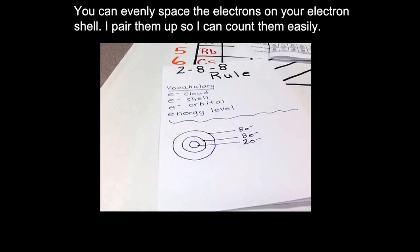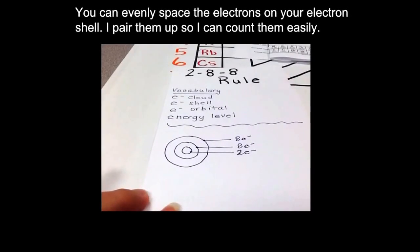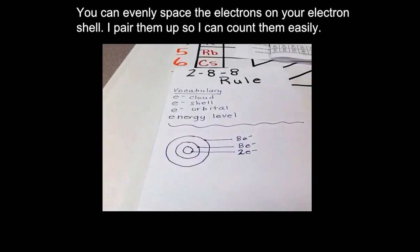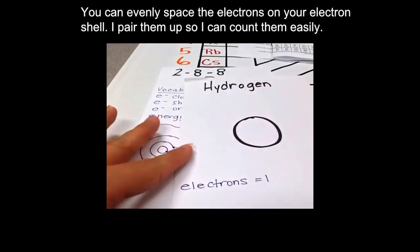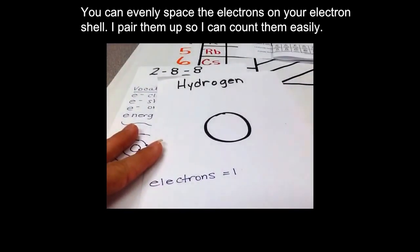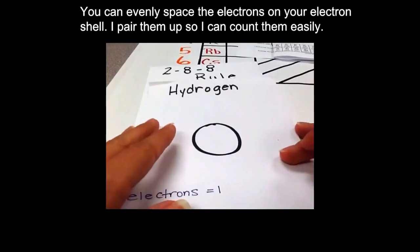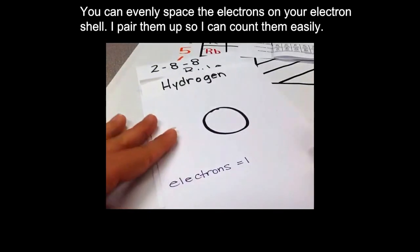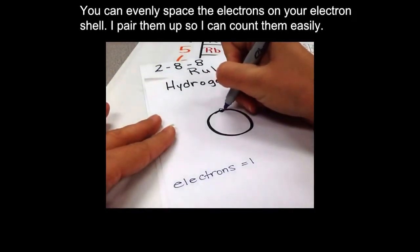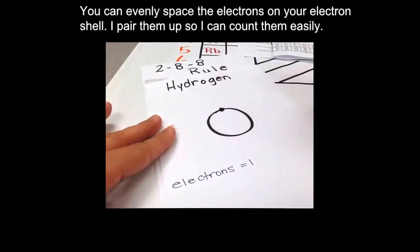Now, let's look at some examples of what this looks like. So if I have hydrogen, which has only one electron, according to my 2-8-8 rule, I can only put one electron in that first energy level.